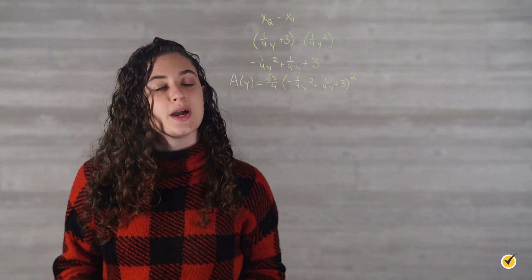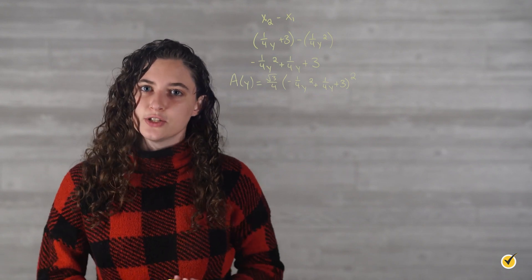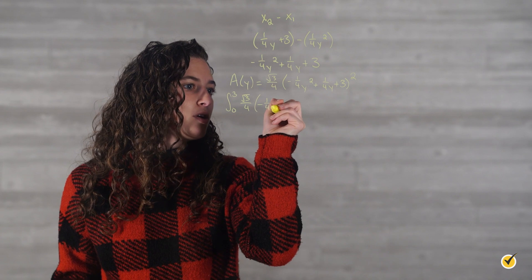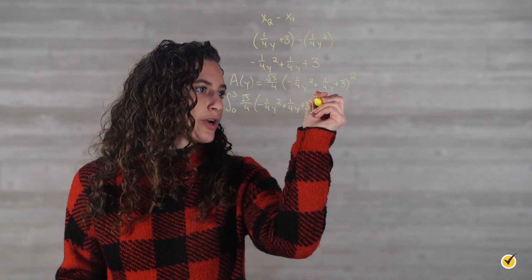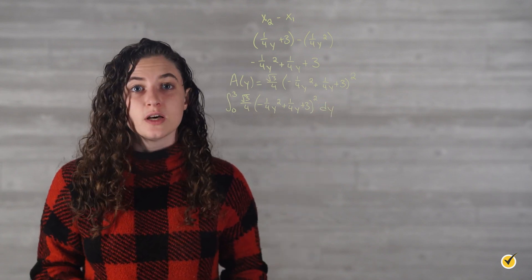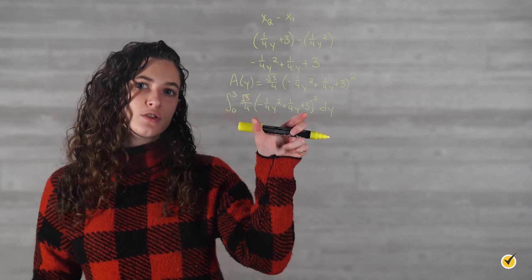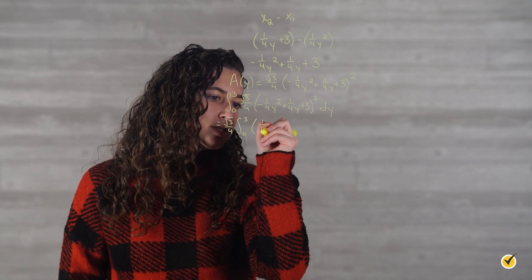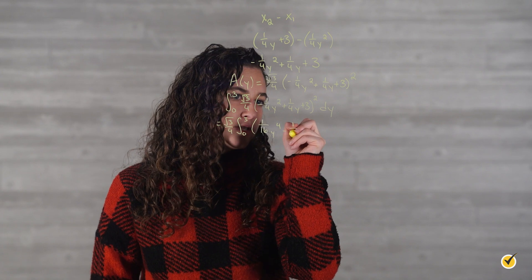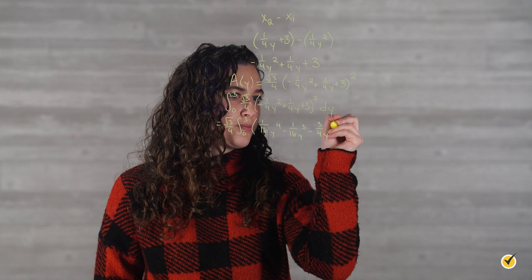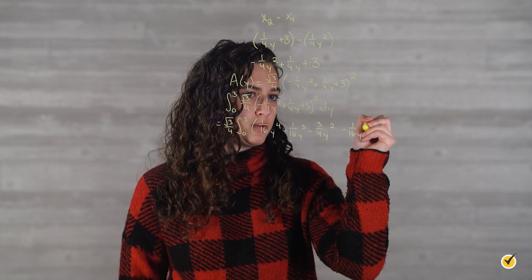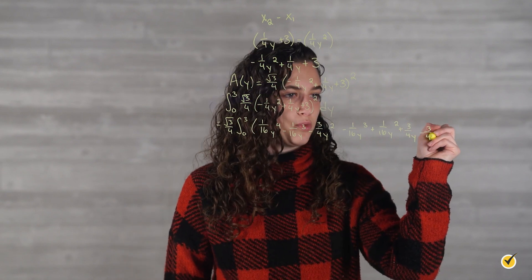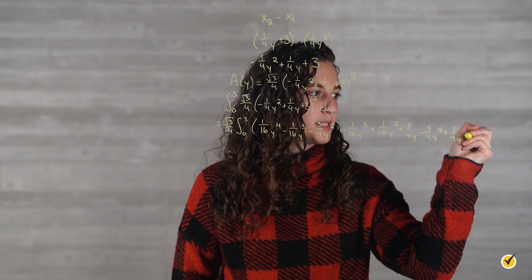The bounds of integration for this shape will be at y equals 0 and y equals 3, as mentioned in the problem statement. So we'll have the integral from 0 to 3 of (√3/4) times (negative one-fourth y² plus one-fourth y plus 3)² dy. To make this integral easier, let's move the constant √3/4 in front of the integral and expand the squared expression inside, giving us (√3/4) times the integral from 0 to 3 of (1/16 y⁴ minus 1/8 y³ minus 23/16 y² plus 3/2 y plus 9) dy.